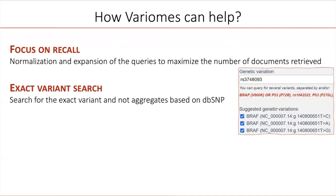Second, Variome keeps the specificity of the user queries. It means that we will return only documents about the variant mentioned in the query, and not an aggregation based on DBSNP identifiers. However, if a user would like to search for an aggregation of variants, it is possible to do so by using a DBSNP identifier.